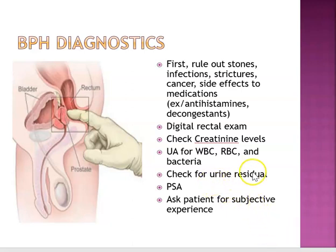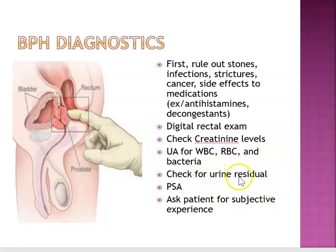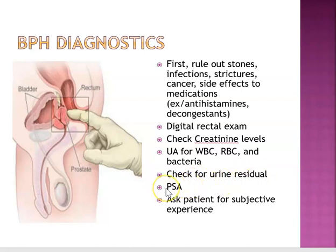To check urine residual, they'll have the patient void and measure how much urine output they have. Then they'll bladder scan them. If there's still residual or the patient still feels like they have to go, they'll catheterize them to measure what's left. They'll also perform blood tests looking for PSA — prostate-specific antigen — which is considered a reliable tumor marker for prostate cancer, still ruling out other issues.